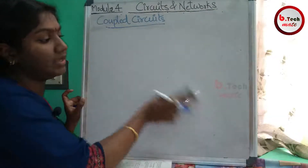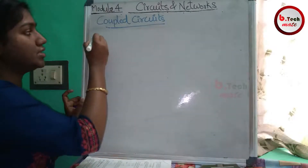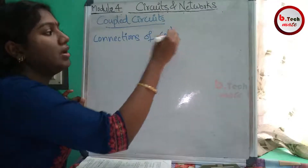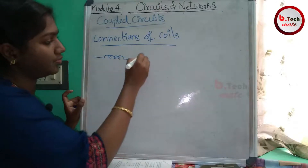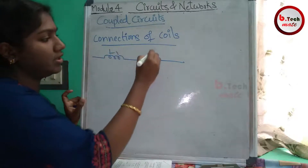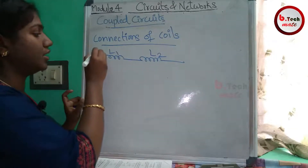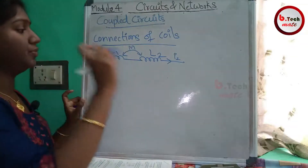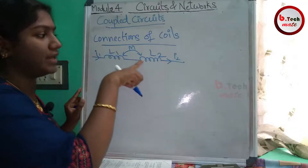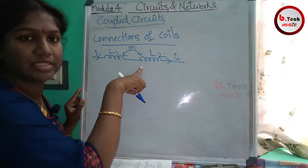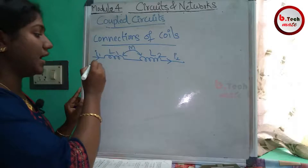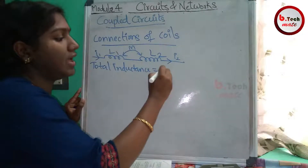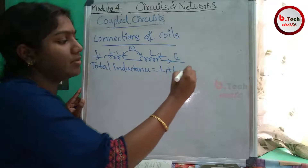The next topic is coupled coils and modeling. The first thing is the connections of coils. There are two types of series connections. Suppose this is L1 and this is L2 — two coils with currents I1 and I2 connected in series. The total inductance for series aiding is equal to L1 plus L2 plus 2M.